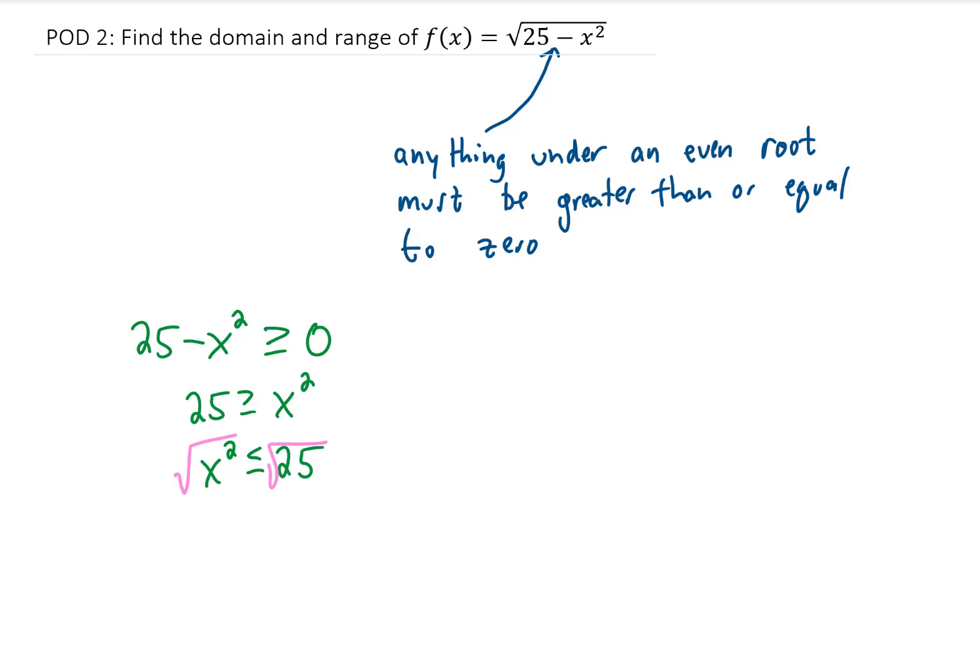However, if we do it this way, we have to remember that the square root of x squared is actually the absolute value of x, so we get the absolute value of x is less than or equal to 5. From here, we would have to remember our rules for inequalities, which say that if we have this absolute value here, we can split this problem up, and x basically has to be sandwiched in between negative 5 and 5. Now, this does give us the domain for this function.